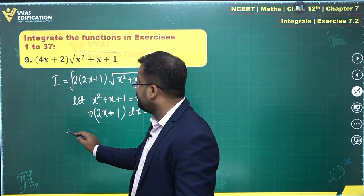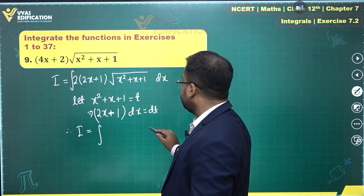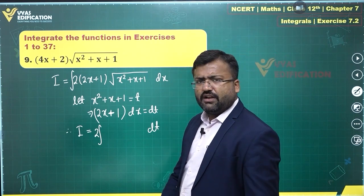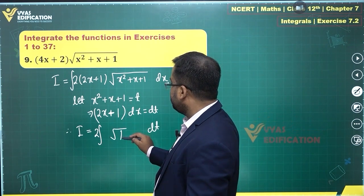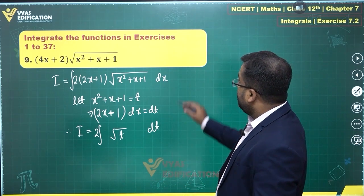Therefore, integral i simplifies to what? I will be equal to integral of 2x plus 1 times dx is dt. There's a 2 remaining outside, that will remain over here, that can go outside the integral. This is root of x square plus x plus 1, which is root t. That's pretty simple.